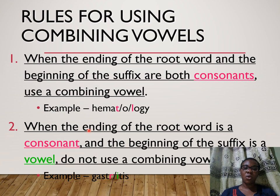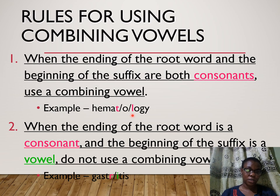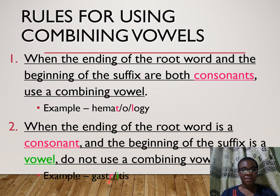The general rules for using combining vowels — the 'o' is not just inserted anywhere. Rule one: when the ending of the root word and the beginning of the suffix are both consonants, you use a combining vowel. For example, 'hemat-' means blood and 'logy' means study — to say 'hematlogy' sounds odd because 't' and 'l' are both consonants, so the combining vowel 'o' comes in: 'hematology'. Rule two: when the root word ends in a consonant but the suffix begins with a vowel, you do not use a combining vowel. For example, 'gastric' plus '-itis' gives you simply 'gastritis'.